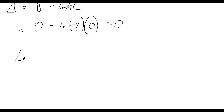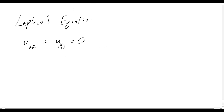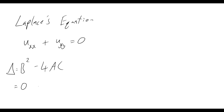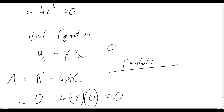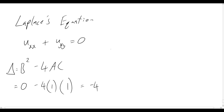Lastly, Laplace's equation: u_xx + u_yy = 0. There is no mixed partial derivative, so b = 0. The coefficients are a = 1 and c = 1, giving discriminant = 0 − 4(1)(1) = −4, which is less than zero. Therefore Laplace's equation is elliptic, and as noted earlier, it describes equilibrium problems.